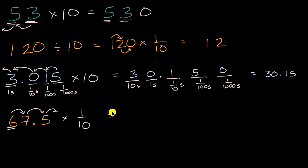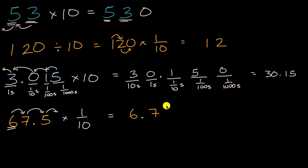So let's write that out. Our six is going to go into the ones place, and then we're going to have our decimal point. Our seven is going to go into the tenths place, and then our five is going to go into the hundredths place. So there you have it — we get 6.75.